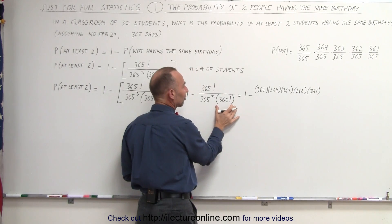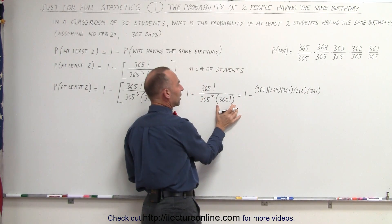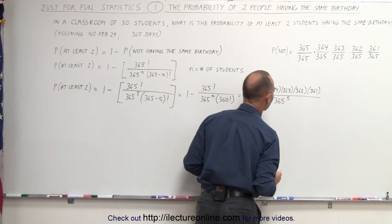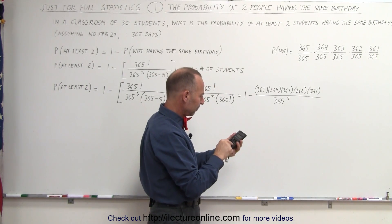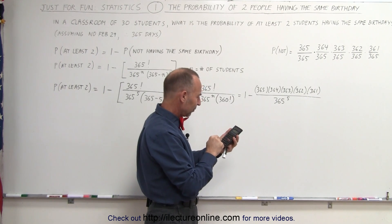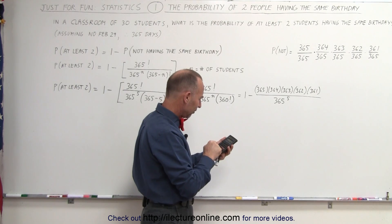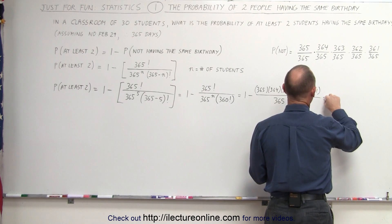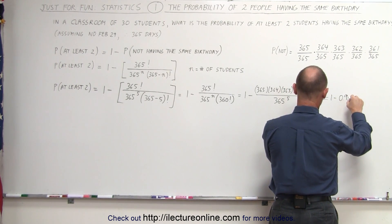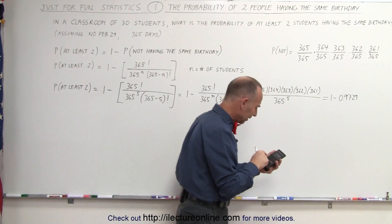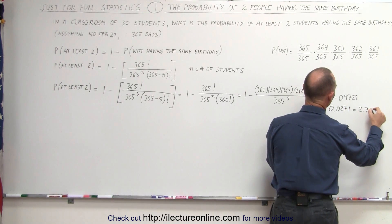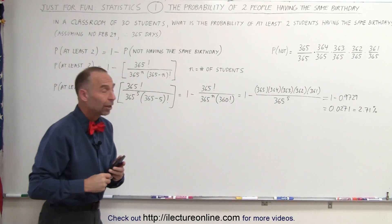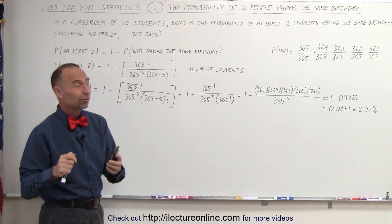All the other terms cancel out with 360 factorial, leaving 365 to the fifth power in the denominator. Calculating the numerator — 365 times 364 times 363 times 362 times 361 — then dividing by 365 to the fifth power, gives 0.9729. So 1 minus 0.9729 equals 0.0271, or about 2.71%. That's almost a 3% chance that if five people are in the room, at least two of them will share a birthday — a very small probability.